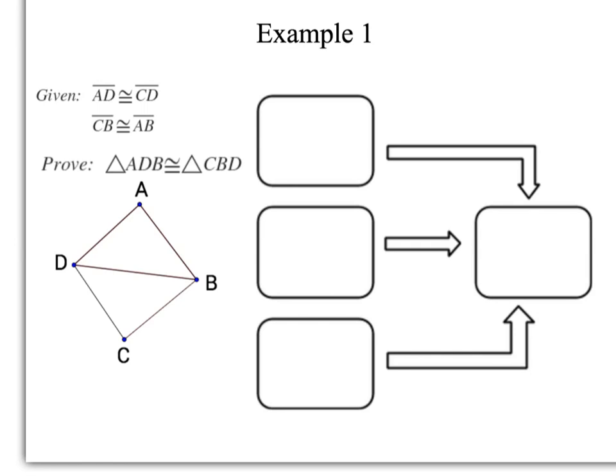I like to start proofs by putting everything in my picture. So I'm going to start with the given AD congruent to CD by using tick marks on those sides. Next given that I have is CB congruent to AB, so again I'm going to put tick marks. I have to use a different set of tick marks this time.